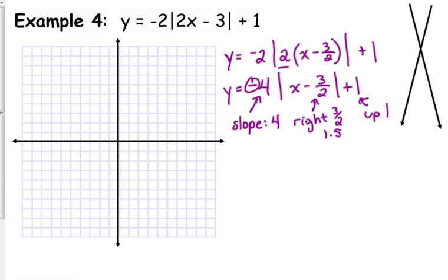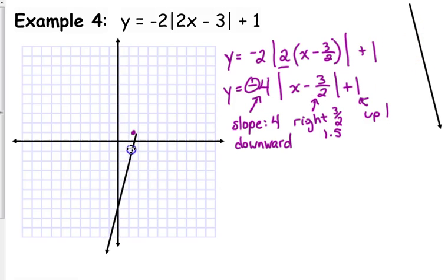It was negative, so it opens downward. The vertex is at (1.5, 1). It's a bit tricky to count a slope of 4 from a fractional value, but go straight down 4 units from that point, and going over 1 will land you halfway between the next grid block.